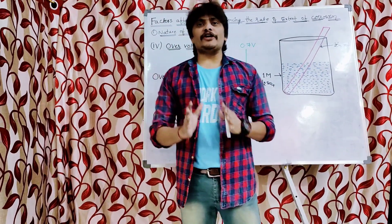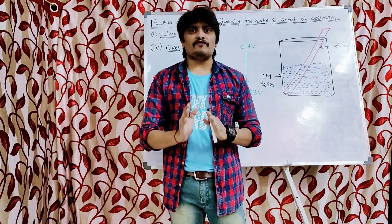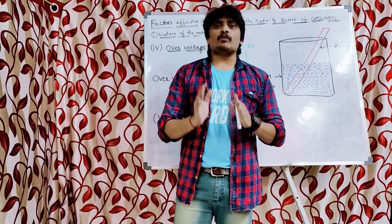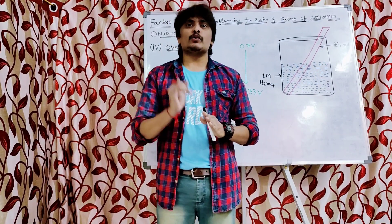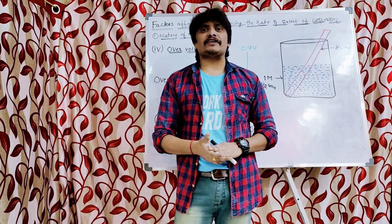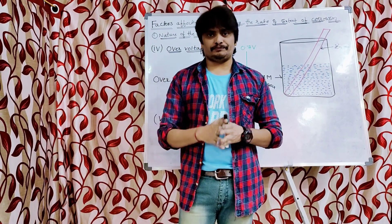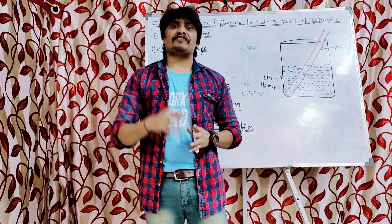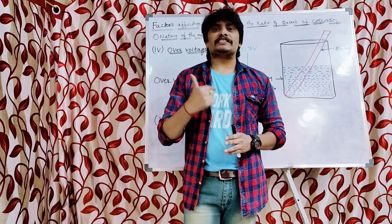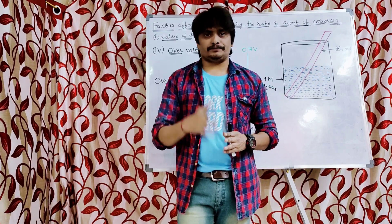Hi students. This particular video is Part 3 of factors affecting or influencing the rate and extent of corrosion. Before watching this video, please do watch Part 1 and Part 2 of factors affecting the rate and extent of corrosion, which has been given in the description. In Part 3, we are going to discuss 3 sub-factors which come under the category of the nature of the metal, which is the broad category affecting the rate and extent of corrosion.